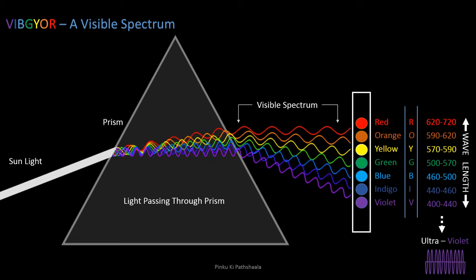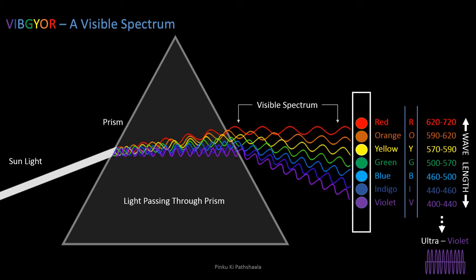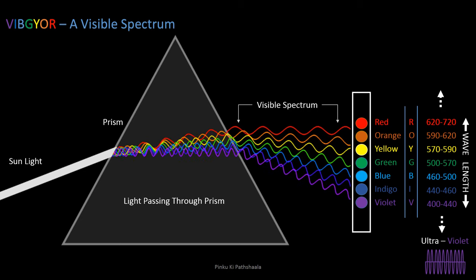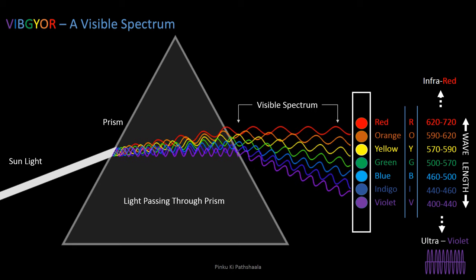before violet color, we have ultraviolet rays. And after red color, infrared waves starts.